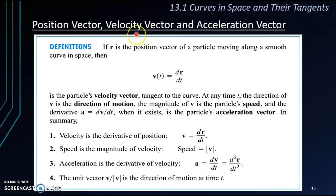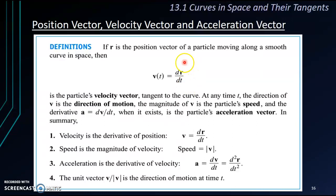To find the velocity vector, what we need to do is differentiate the position vector. Then, to find the acceleration vector, we differentiate v — or in other words, we find the second derivative of the position vector.